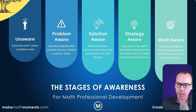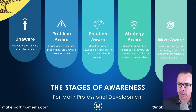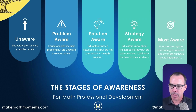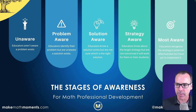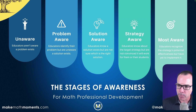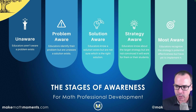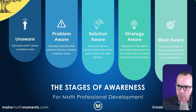Strategy aware — educators know what strategy you're working on, they know it's a good solution, but they're not yet convinced it's going to work for them. And at the most aware stage, they're ready to implement — they've been convinced. They know there's a problem, they know this is a solution to that problem, they have a feeling it's going to work for their students, but they're not certain yet. They're ready to take that step.